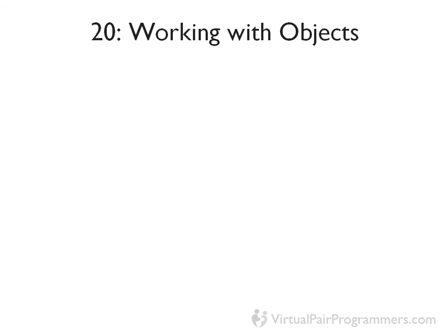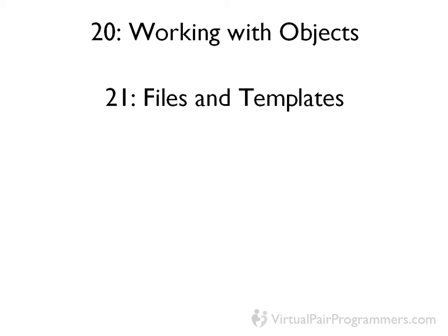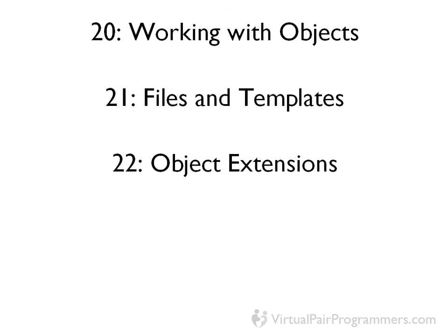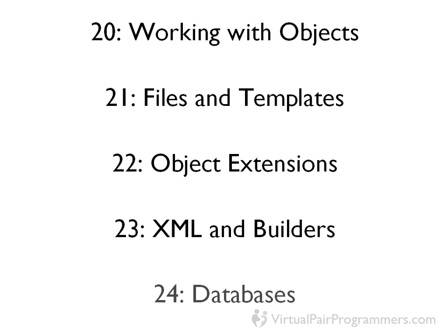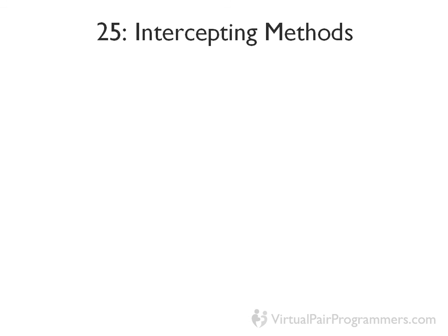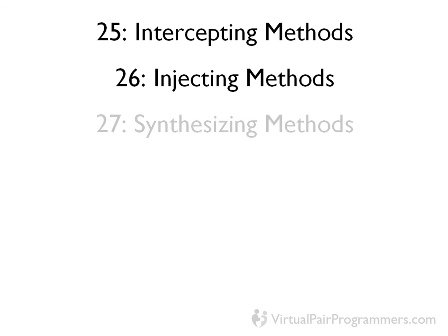The second part of our course looks at some more advanced techniques in Groovy. We'll start with chapter 20 by looking at working with objects in a more dynamic way. Chapter 21 covers files and templates, and in chapter 22 we look at object extensions — ways to add methods into objects. Chapter 23 covers XML and builders. In chapter 24 we'll be looking at databases. We've then got three chapters that focus on the meta object protocol: chapter 25 looks at intercepting methods, chapter 26 has injecting methods, and chapter 27 synthesizing methods.